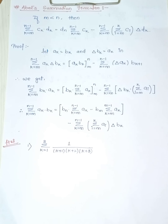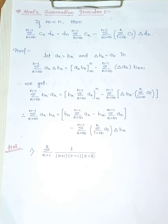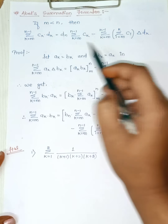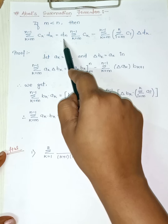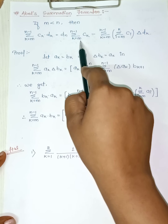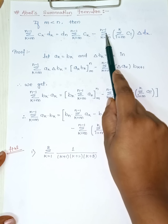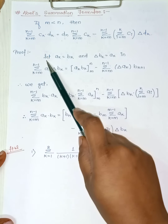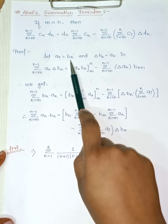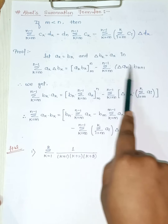The next topic is Abel's summation formula. If m is less than n, then summation from k equals m to n minus 1 of c_k d_k equals d_n times summation of c_k minus summation from k equals m to n minus 1 of summation of c_i times delta d_k. We consider a_k equals b_k and delta b_k equals a_k — they are opposite in this context.